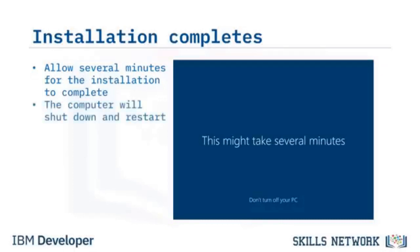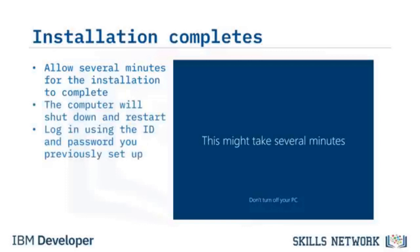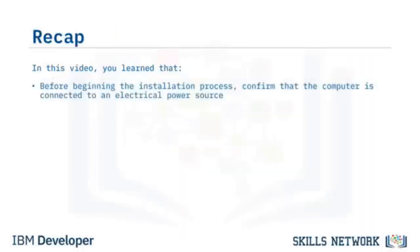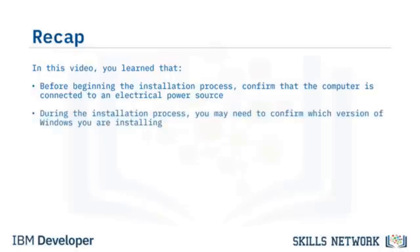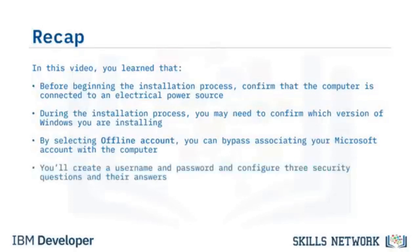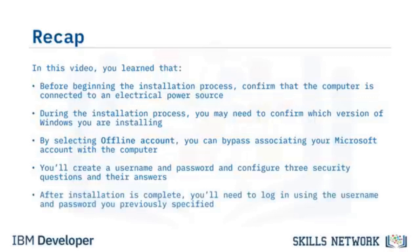You'll see an opportunity to enable Cortana, Microsoft's Digital Assistant — you can click Not Now or Accept. After completing the installation steps, your workstation will take several minutes to finish, then shut down and restart. The next time you access the computer, you'll enter the username and password specified during installation. Congratulations — after logging back in, you'll see the default Windows 10 desktop. In this video you learned that before installation, confirm the computer is connected to power. By selecting Offline Account, you can bypass associating your Microsoft account. You'll create a username, password, and three security questions as part of setup.